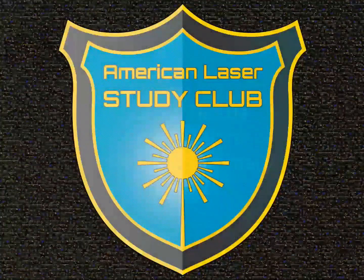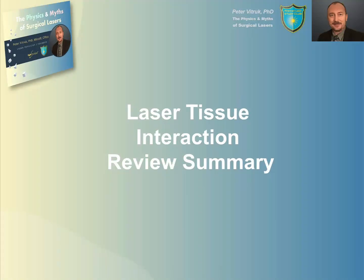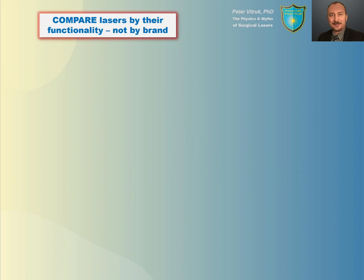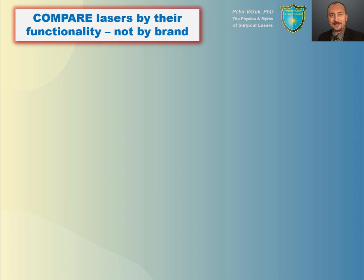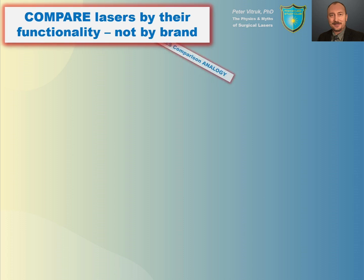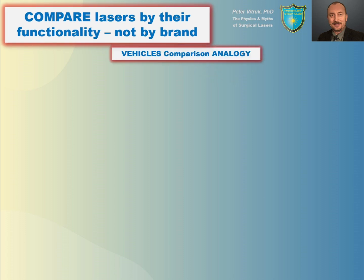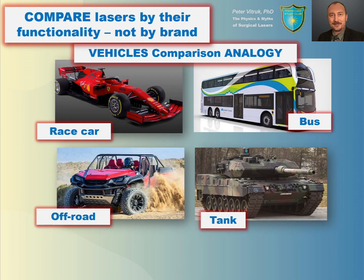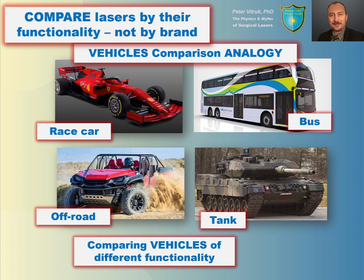Welcome to this short review of laser-tissue interaction relevant for soft tissue surgical lasers. We want to look at soft tissue lasers from the perspective of their functionality. A very helpful analogy is the way we compare vehicles of different functionality. Take a look at the four quadrants in this sketch — this is exactly the idea of how you want to look at medical lasers and what they can do functionally.